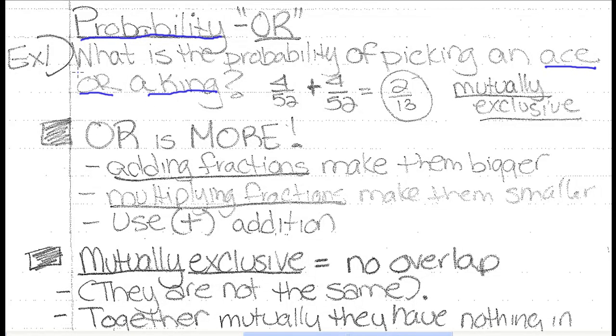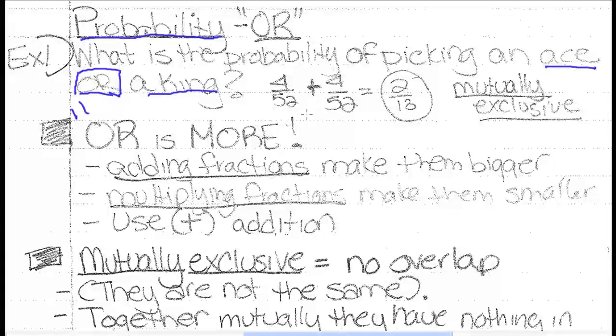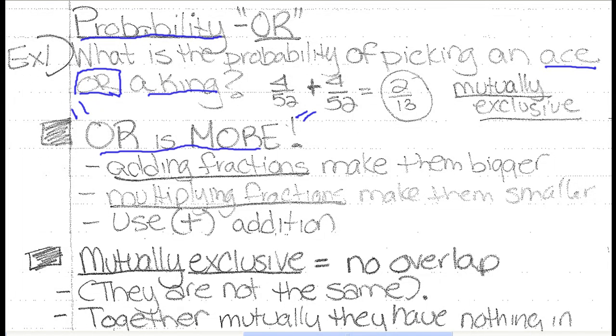Now the key word here is or. Let's remember that or is more. This topic is going to come up a lot this year. What does that mean, or is more? If I'm giving options here, ace or a king, the probability should go up.